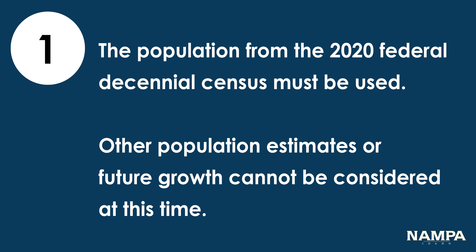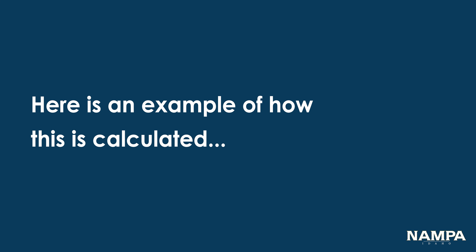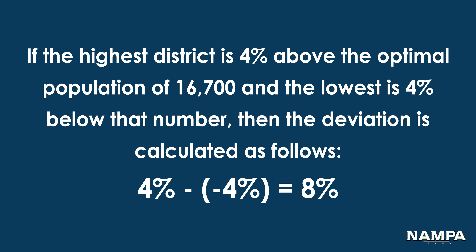The Idaho and U.S. Supreme Courts have held that a maximum population deviation of 10% between the highest and lowest populated districts meets the constitutional requirements. Here is an example of how this is calculated: if the highest district is 4% above the optimal population of 16,700 and the lowest is 4% below that number, then the deviation is calculated as follows — 4% minus negative 4% equals 8%.